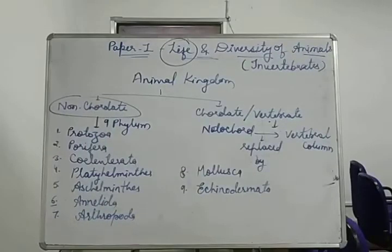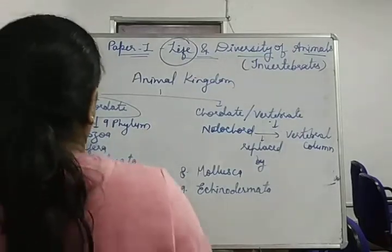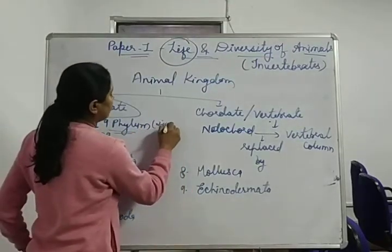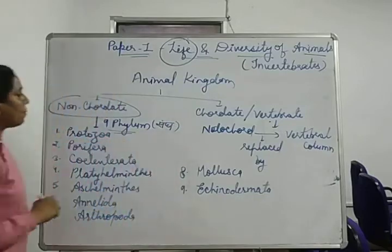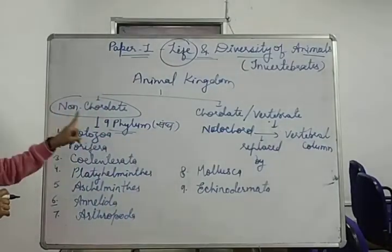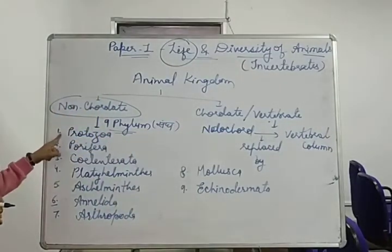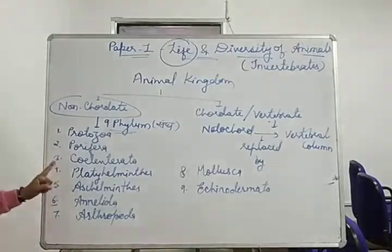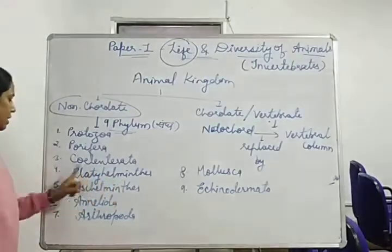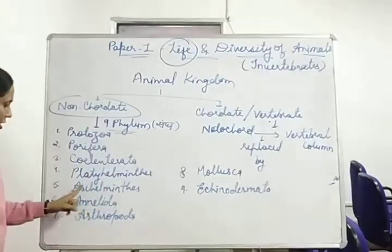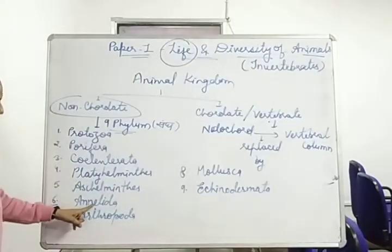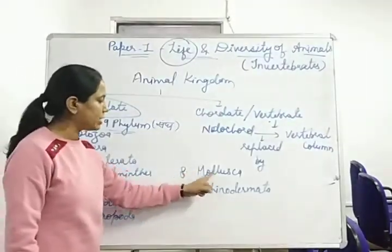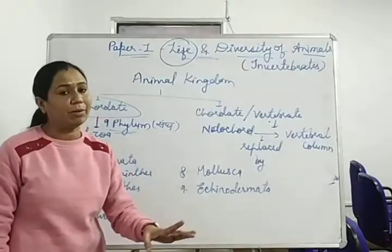Non-cordates are divided into nine phyla. Phylum means sangh. First is Protozoa. Second is Porifera. Third is Coelenterata. Fourth is Platyhelminthes. Fifth is Aschelminthes. Sixth is Annelida. Seventh is Arthropoda. Eighth is Mollusca. And ninth is Echinodermata. All these phyla are included in non-cordates.